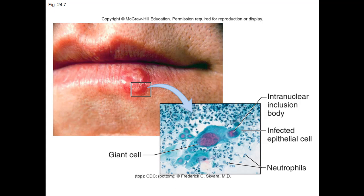The first one to deal with is oral herpes simplex, otherwise known as cold sores. During the initial infection, you have fever, sore throat, blisters, and ulcers in the mouth. Later, the disease becomes latent and reoccurs with painful, tingling, or itching sensations on the lips with subsequent blisters and ulceration. Healing takes about 7 to 10 days. Involvement with the esophagus is suggestive of AIDS or other immune deficiency. This is usually caused by herpes simplex type 1.